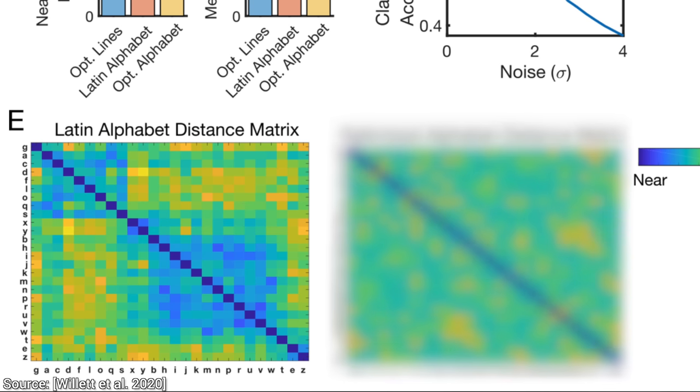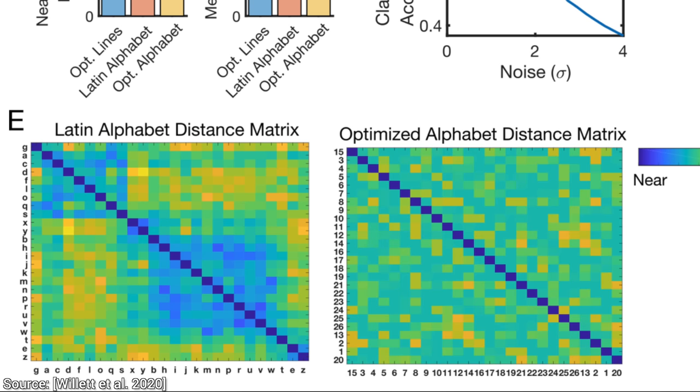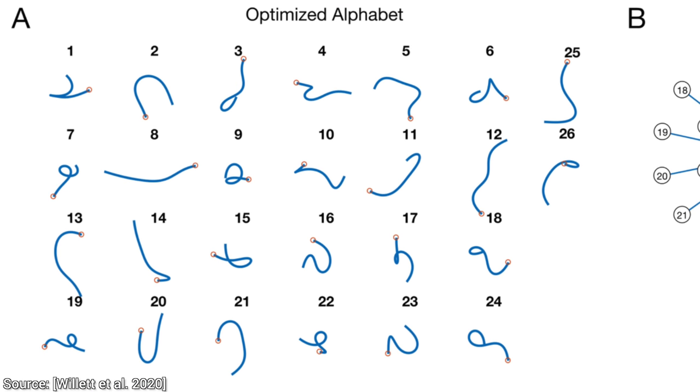And now, look. Here is the same distance matrix for the optimized alphabet. No dark blue in sight outside the diagonal. Much easier to process and decode. If neural networks were in charge, this is what the alphabet would look like. Glorious.